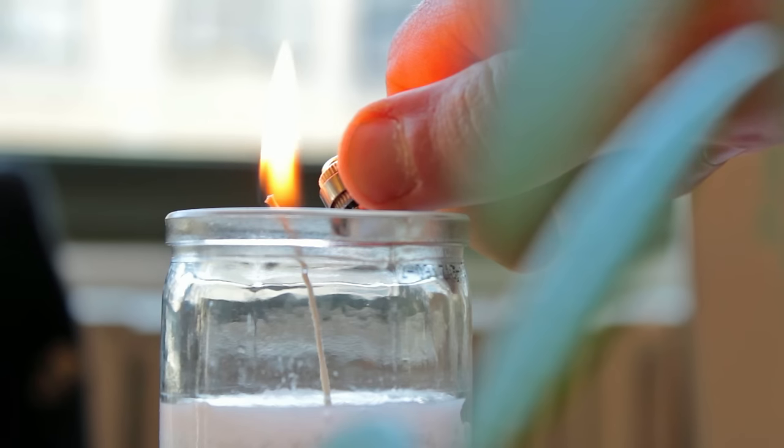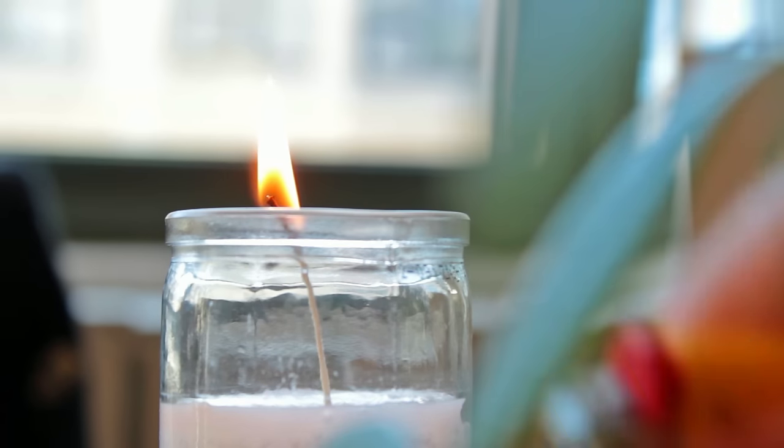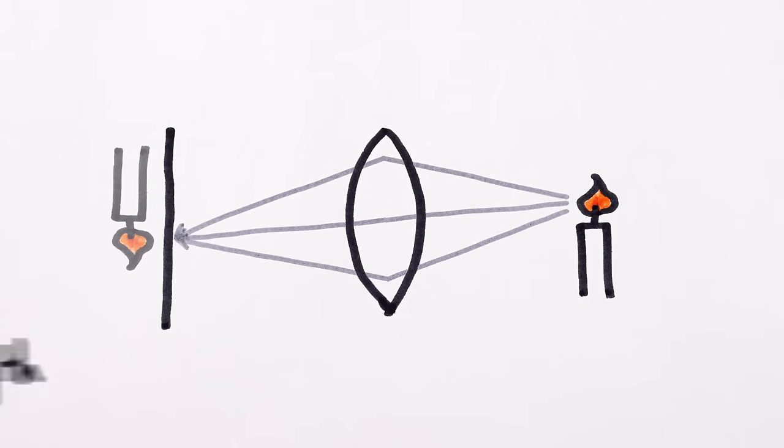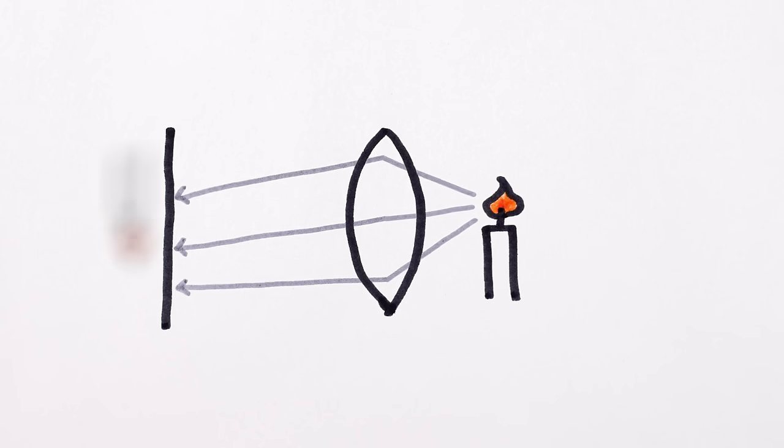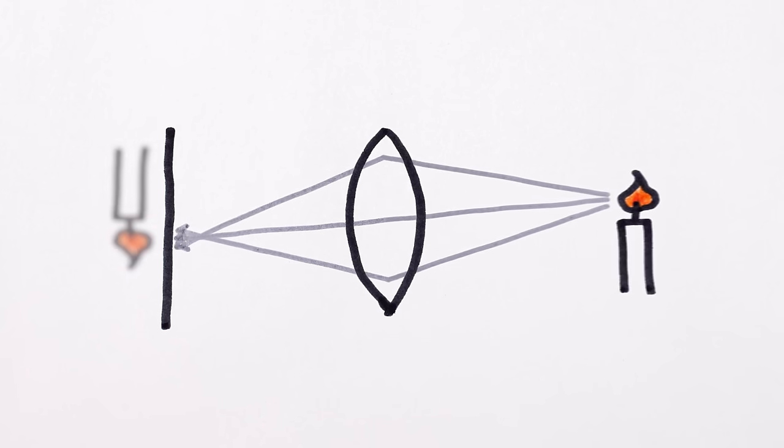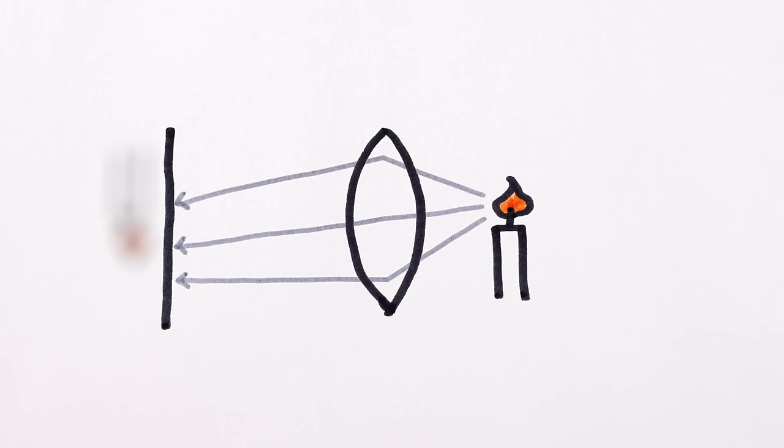When we look at an object, the background and foreground are usually blurry, because a lens can only focus light coming from one distance away. If an object is too near or too far, its light will again be spread out on your retina, leaving you with a blur.